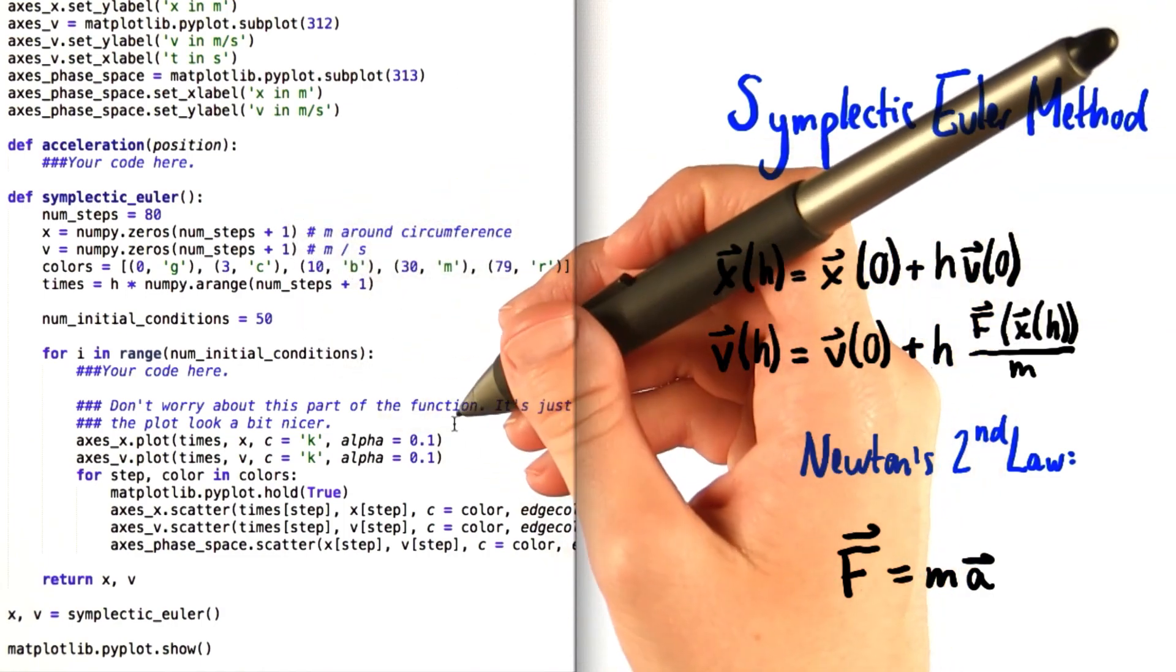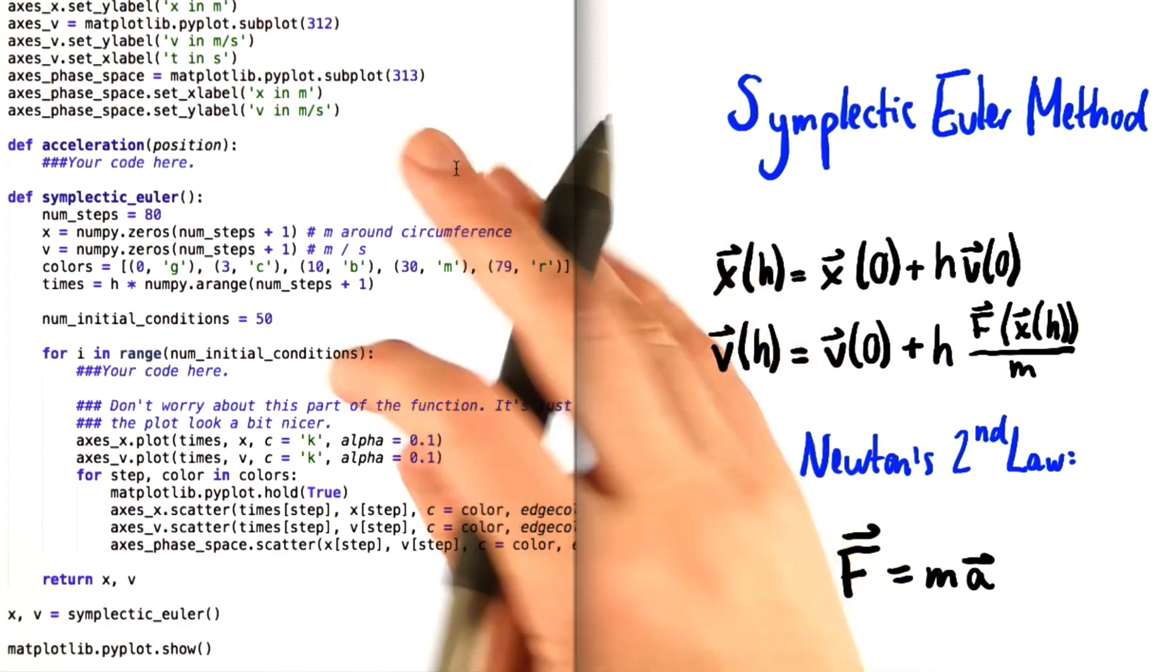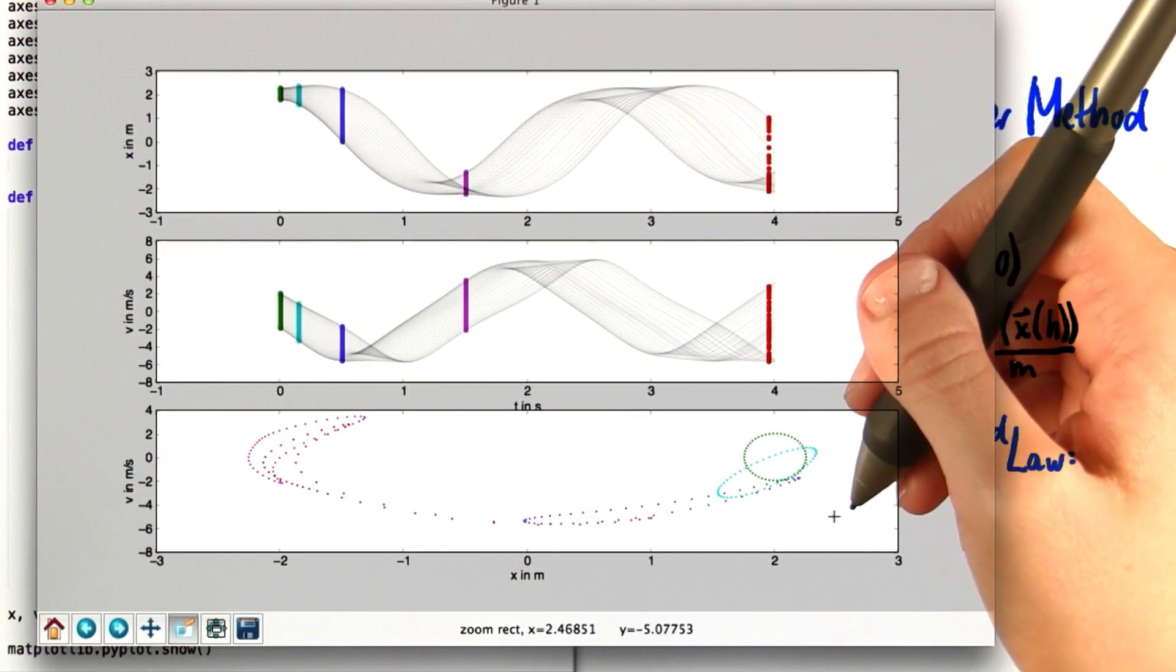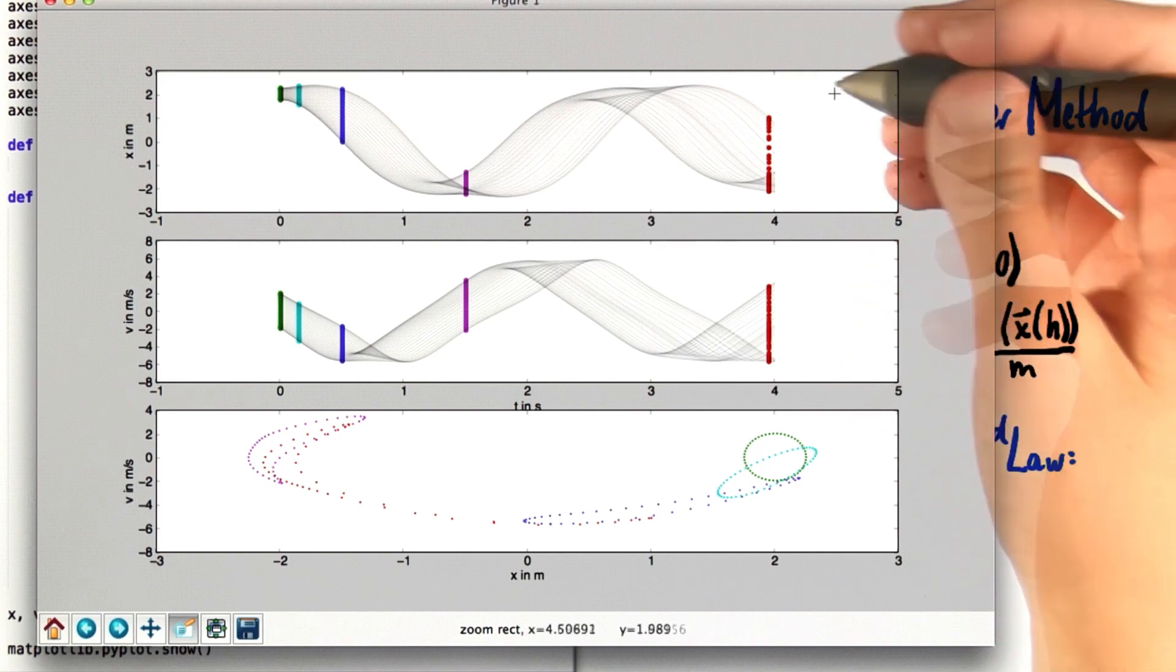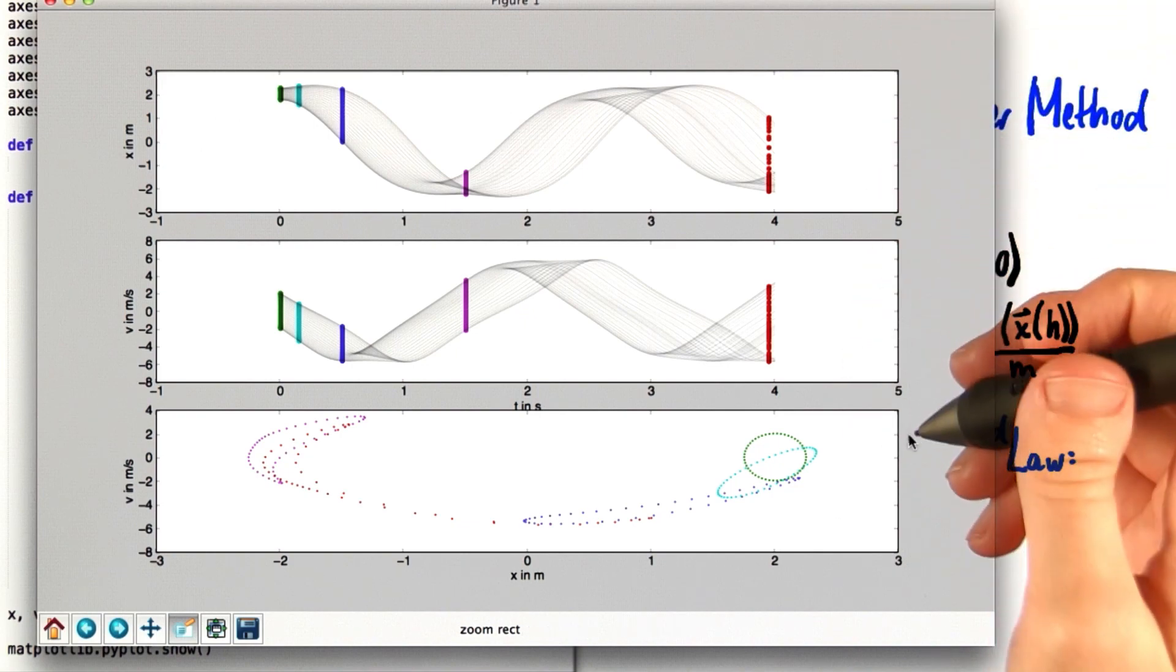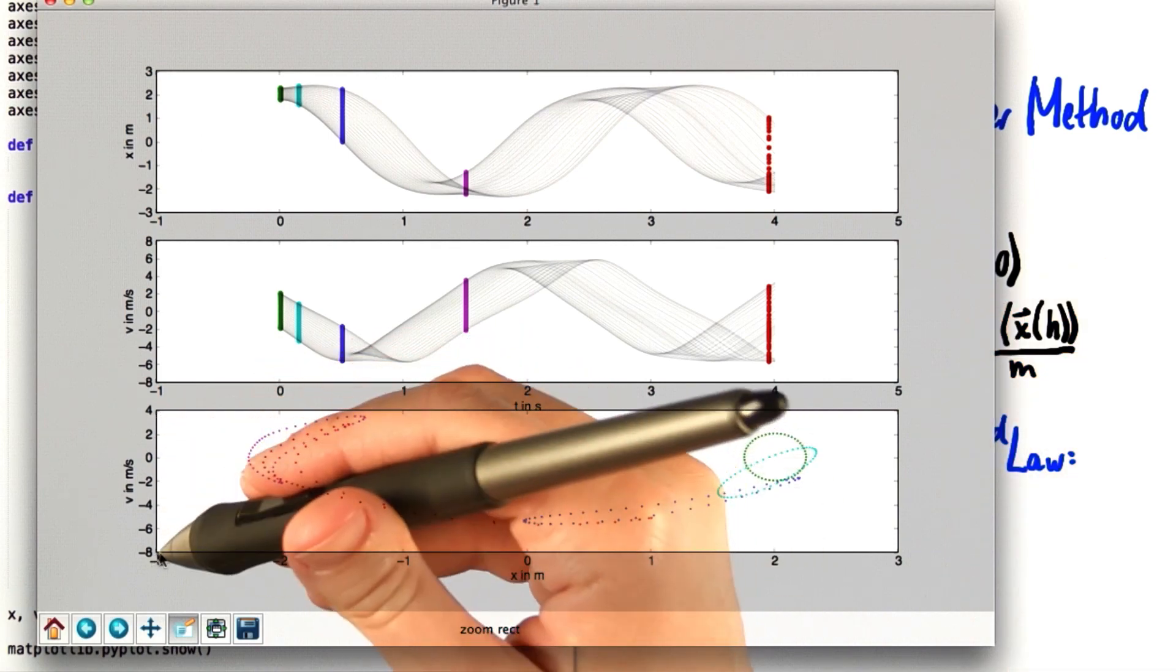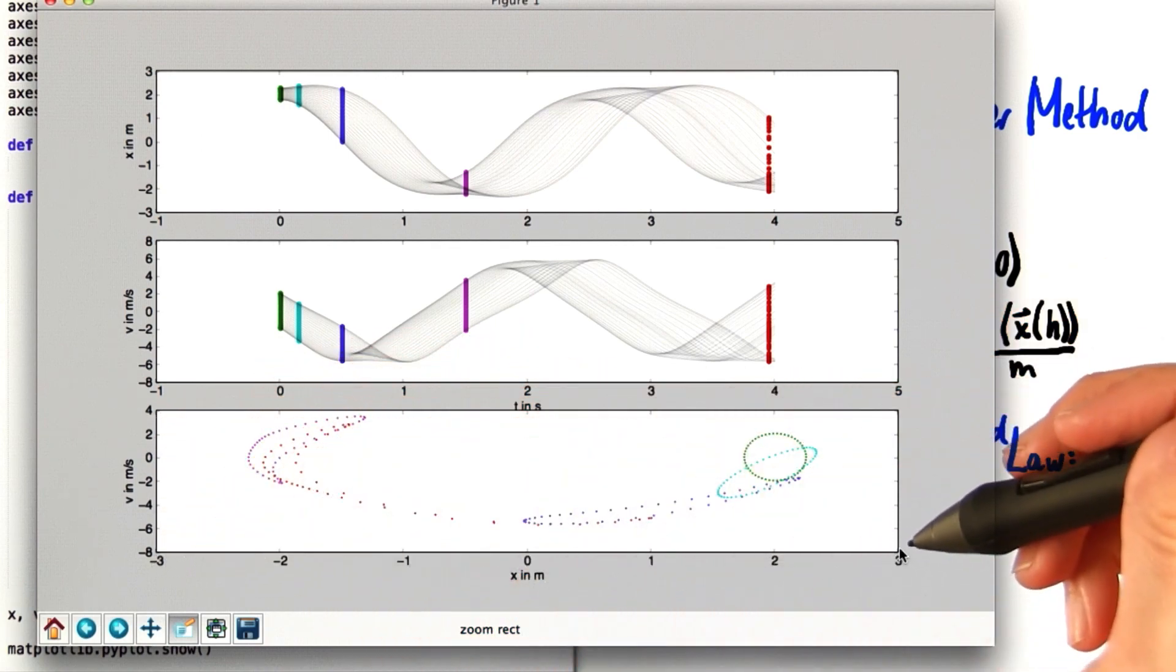Now, to give you a visual of what this looks like, I'm going to show you the final plot that you'll get with this program. So here's the set of graphs that you should get as your final result if the program is working correctly. We're going to ignore these top two graphs for now. Let's focus on this bottom plot. This is showing velocity on the vertical axis and position on the horizontal axis.